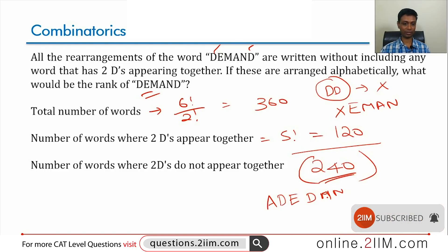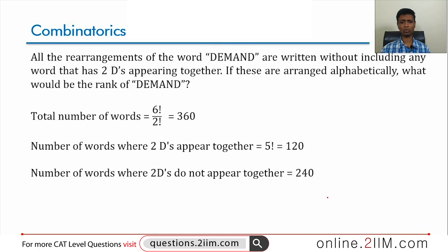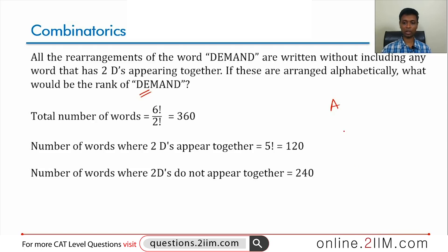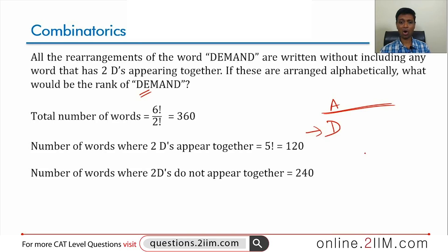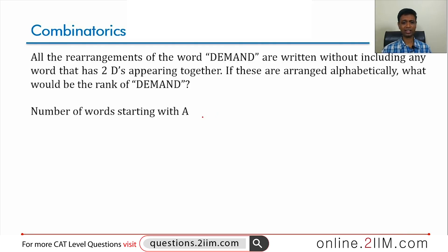To find the rank of DEMAND, the first set of words are those starting with A, and the next set are those starting with D. Our answer lies within the D set. First, let us find all words starting with A — all of those go before DEMAND — and put that count in the bank.